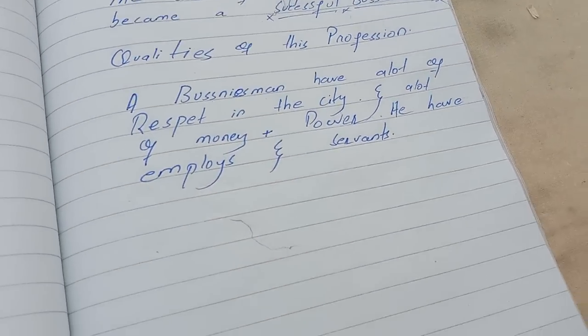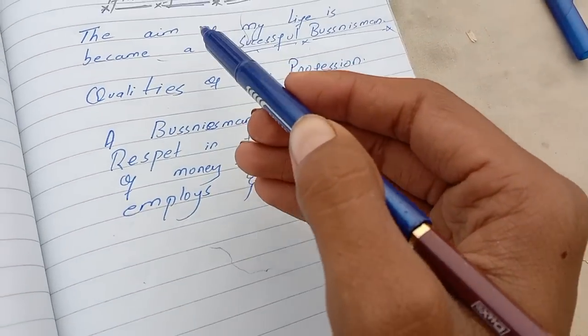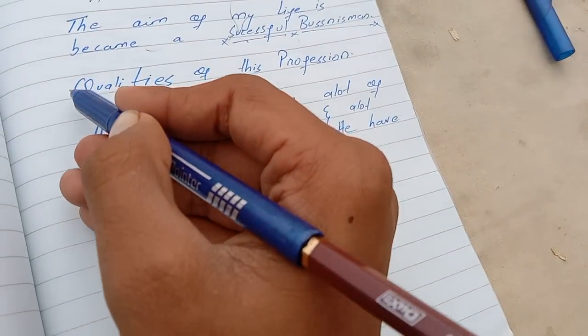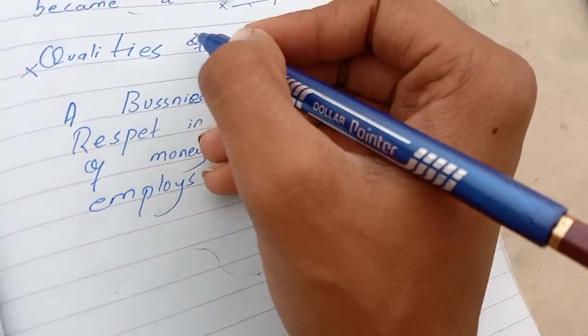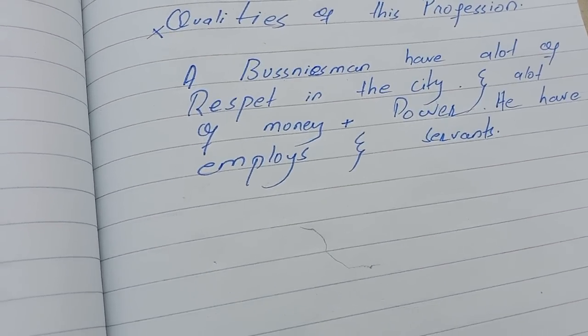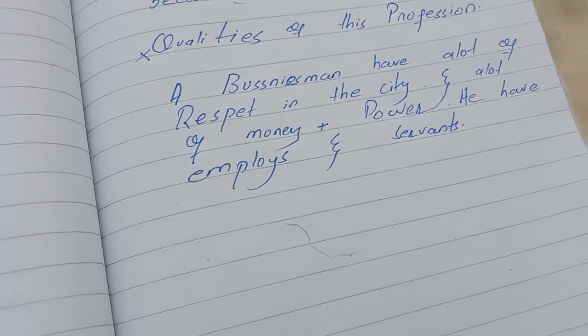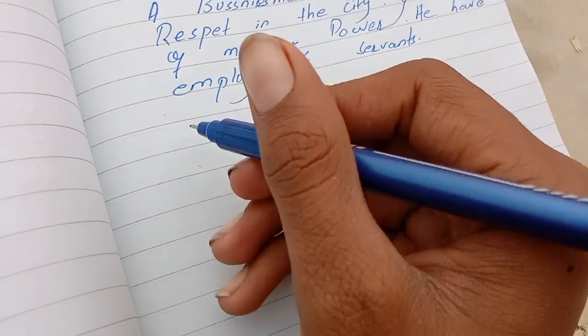So you will write first your aim of life, and then you write qualities of the profession you want to become. And once again I say that number third - how we succeed in your aim.